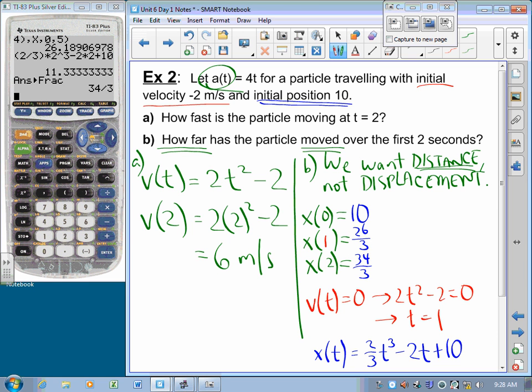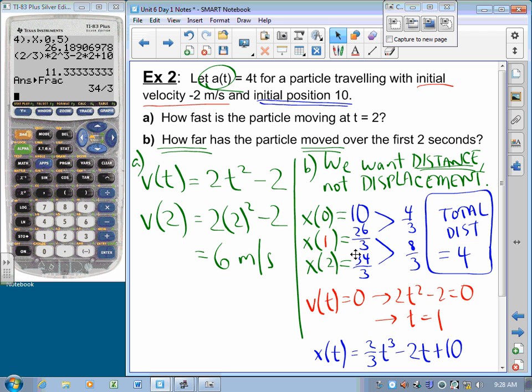So, how far did the particle travel between 0 and 1? The particle traveled 4 thirds. How far did the particle travel between 1 and 2? The particle traveled 8 thirds. So, the total distance traveled is 12 thirds. And that's a distance of 4, maybe meters. We'll say meters.